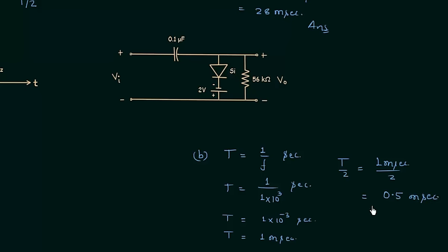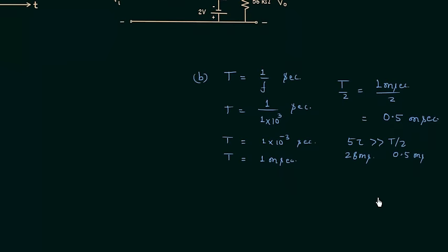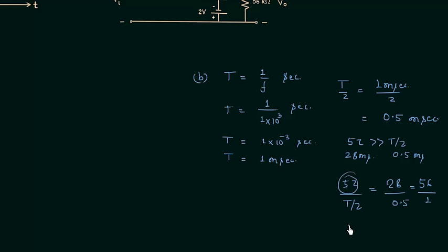Comparing 5 tau with T by 2, we find 5 tau is greater than T by 2, because 5 tau equals 28 milliseconds and T by 2 equals 0.5 milliseconds. To find how many times 5 tau is greater, we compute 5 tau divided by T by 2: 28 ms divided by 0.5 equals 56. So 5 tau is 56 times T by 2. This is the general assumption in case of clampers.